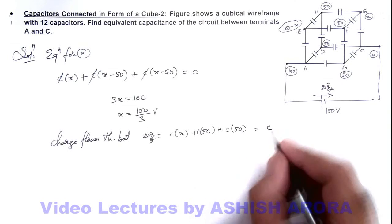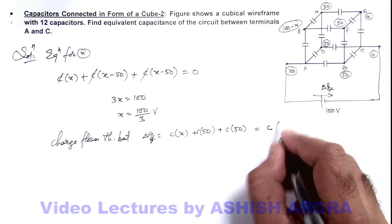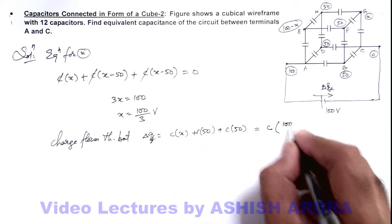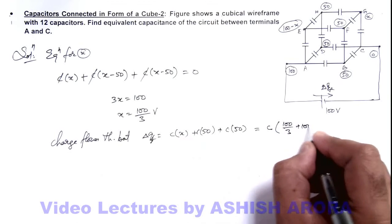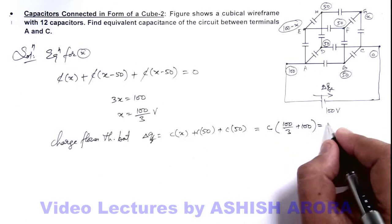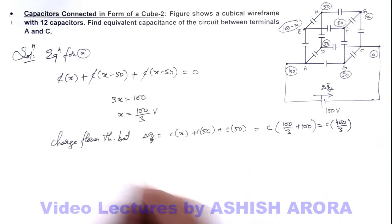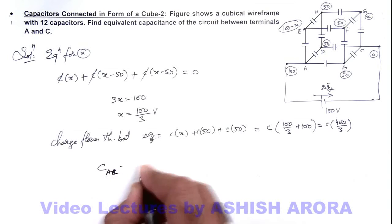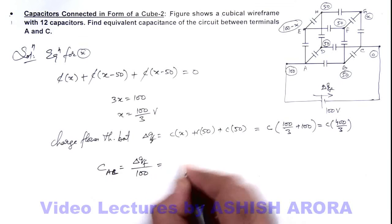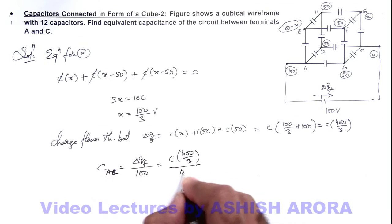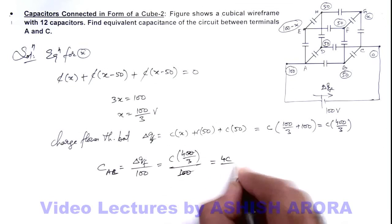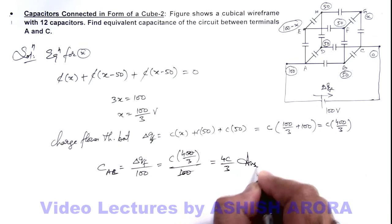So this will be C multiplied by 100 by 3 plus 100. This is C multiplied by 400 by 3. So capacitance across terminals A and C can be given as delta q_f by 100. This will be C multiplied by 400 by 3 divided by 100, which will give us 4C by 3. That is the answer to this problem.